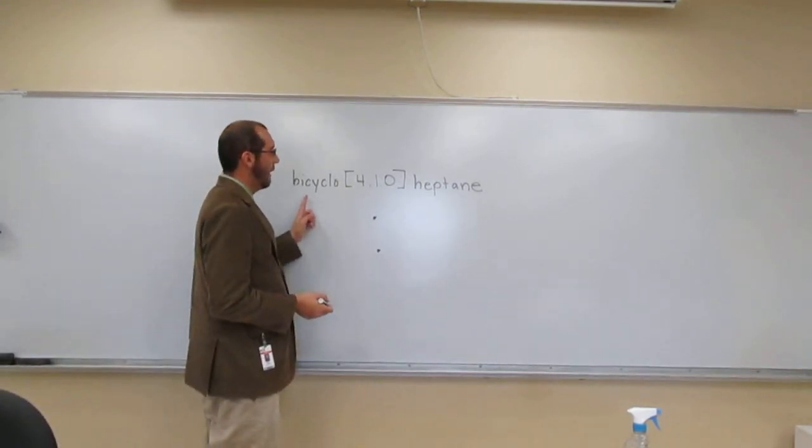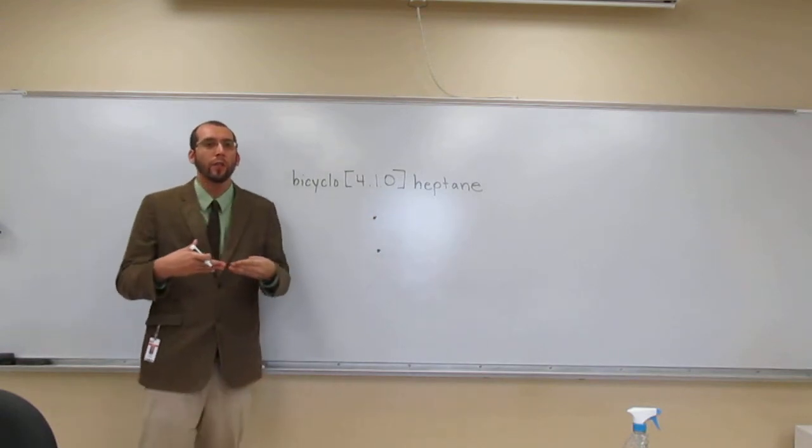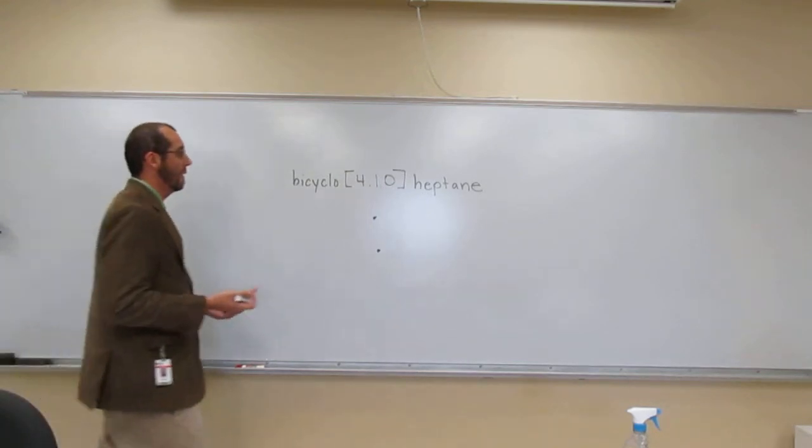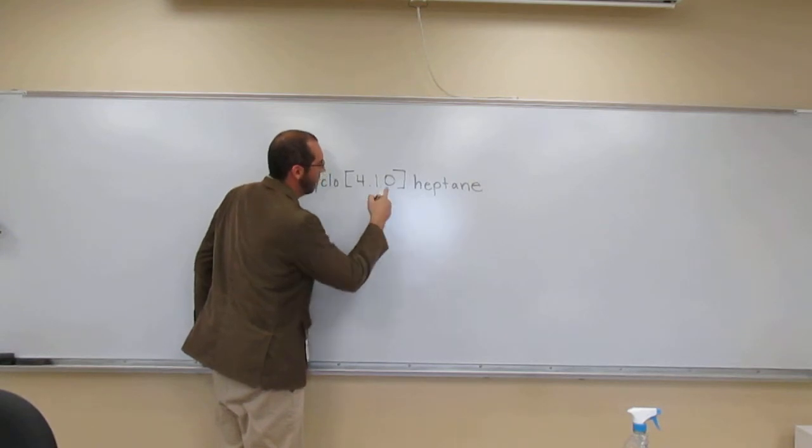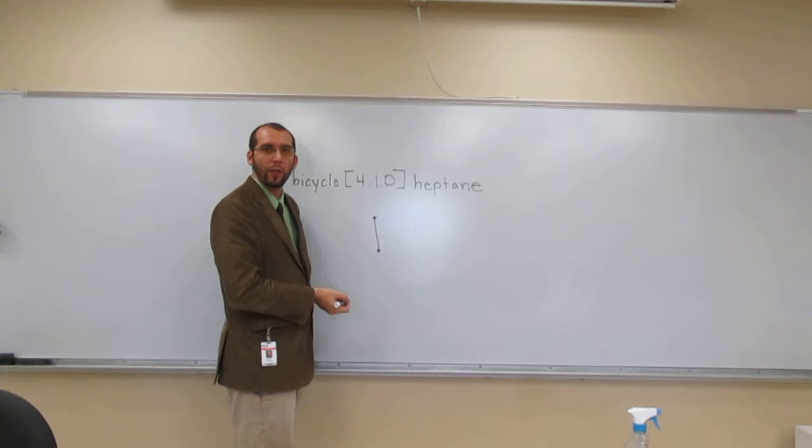What are we saying? It's bicyclo, but four one zero. So there's really only two fused rings here. One of the rings isn't present, right? So let's go zero, so there's gonna be just a line between the two bridgeheads.